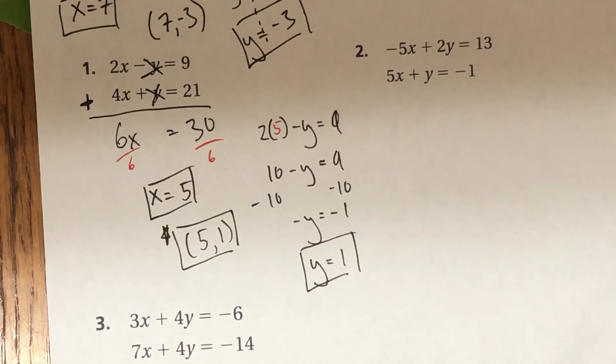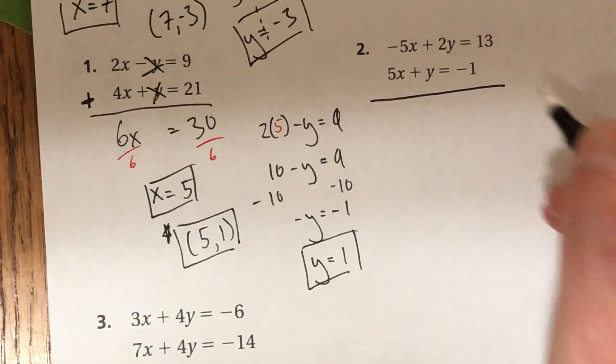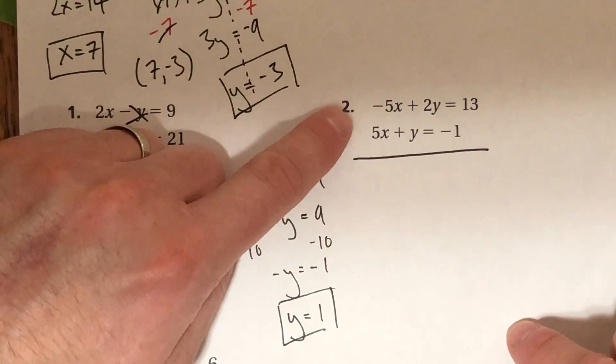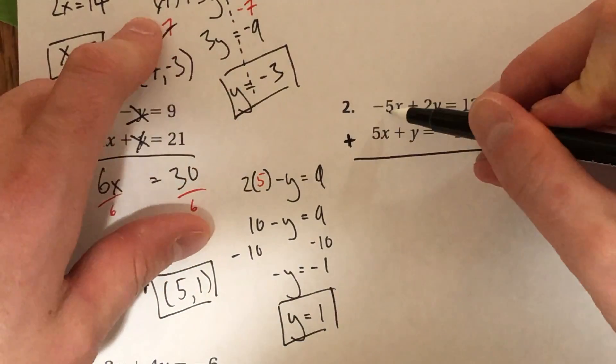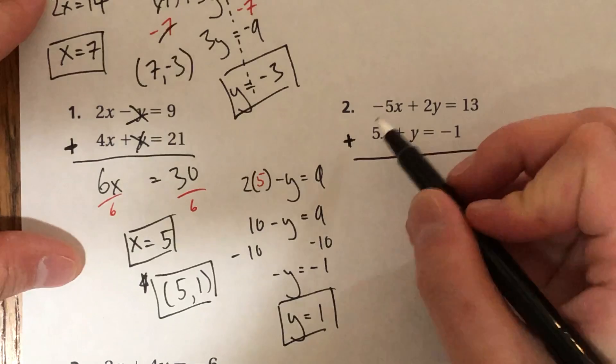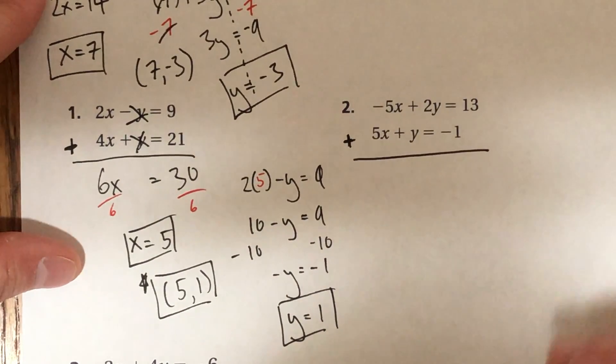Okay, team. Hey, helping you get started on your next few. Number 2. This one, I also recommend adding these because the variable term for x here, 5x and 5x, one of them is negative, one is positive. So if you add them together, they'll cancel out.